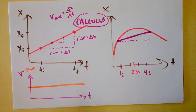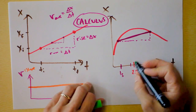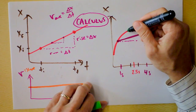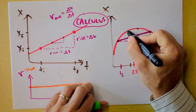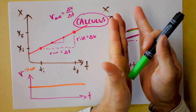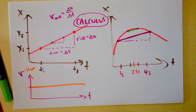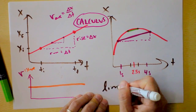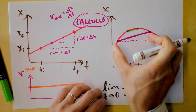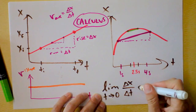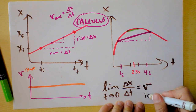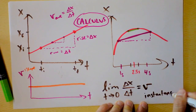To find the velocity at a specific instant, I need to zoom in further. I might take the interval between two seconds and three seconds — a similar but not exactly the same slope. Ultimately we narrow the interval more and more, which is called a limit: the limit as Delta T approaches zero of Delta X over Delta T gives us the instantaneous velocity V.